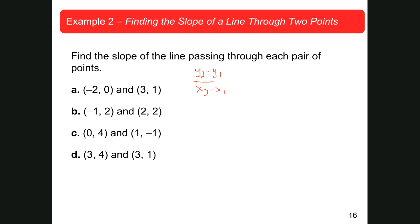So here I call this x1, y1 — the subscript one is 0, 1. This would be x2, y2 — the second point. So I would go 1 minus 0 over 3 minus negative 2. 1 minus 0 is 1, 3 minus negative 2 is 5. So the slope that goes through these two points is 1/5. Finding the slope should be fairly easy.